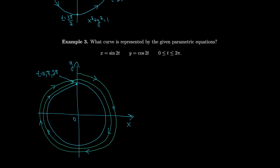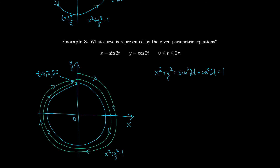To confirm it's the same curve, note x squared plus y squared equals sine squared 2t plus cosine squared 2t equals 1, regardless of whether the argument is t or 2t — cosine squared plus sine squared is always 1 with the same argument. So when you eliminate the parameter you lose information, since both give x squared plus y squared equals 1. But the parameter t and its range provide extra information about how the curve is traced.